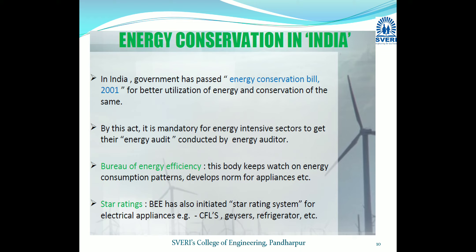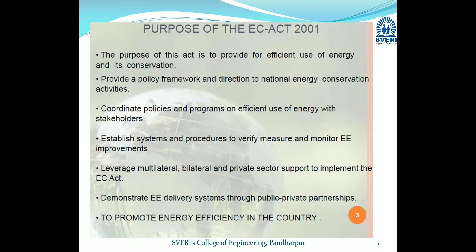The Bureau of Energy Efficiency, or BEE, is a body that keeps watch on energy consumption patterns and develops norms for appliances. BEE concentrates on energy saving and conservation, applies different methods, and gives star rating systems to electrical appliances. In recent times, all equipment shows a star rating system — these are new norms governed by India under the 2001 act.